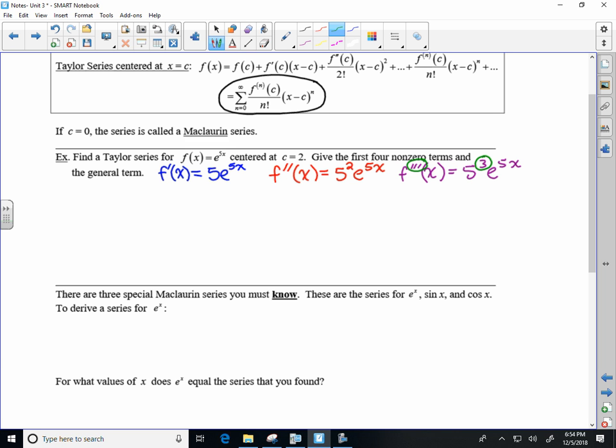So I mean the derivative now specifically at the c value of 2. But again, all I would really care about is the last one because following this progression, I would get f to the n, the nth derivative of f of x, which would be 5 to the nth e to the 5x.